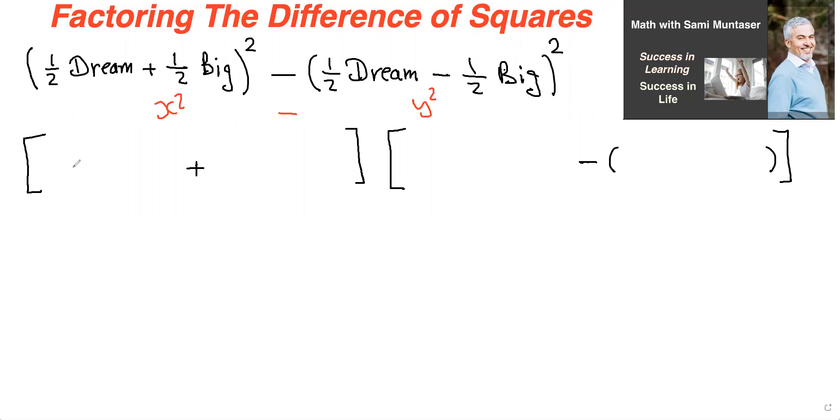And therefore this is the x right here. So my answer is going to be half dream plus half big. And then this is y. So half dream minus half big.